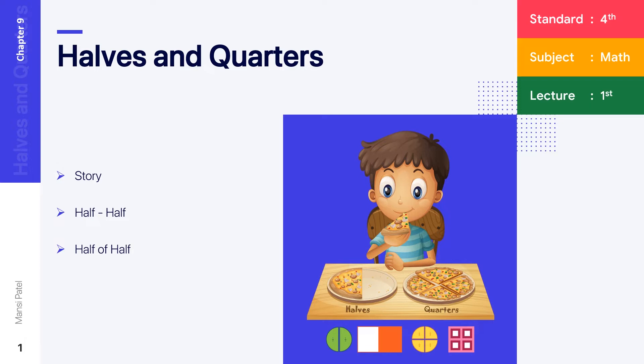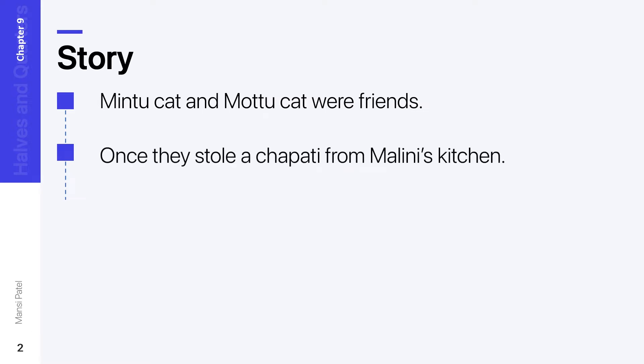So let us start first story. Let us begin with the story. Mintu cat and Motu cat were friends. Two cats were friends and the names of the cats are Mintu and Motu. Once they were going somewhere and they stole one chapati from Malini's kitchen.